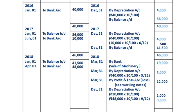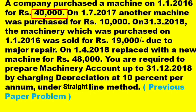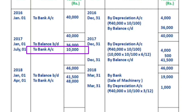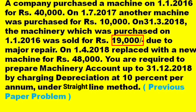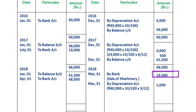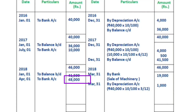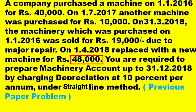The company purchased the first machine on 1-1-2016 for Rs.40,000. On 1-7-2017, another machine was purchased for Rs.10,000. On 31-3-2018, the machine purchased on 1-1-2016 was sold for Rs.19,000 due to major repair. On 1-4-2018, it was replaced with a new machine for Rs.48,000. Depreciation is charged at 10% per annum under the Straight Line Method.